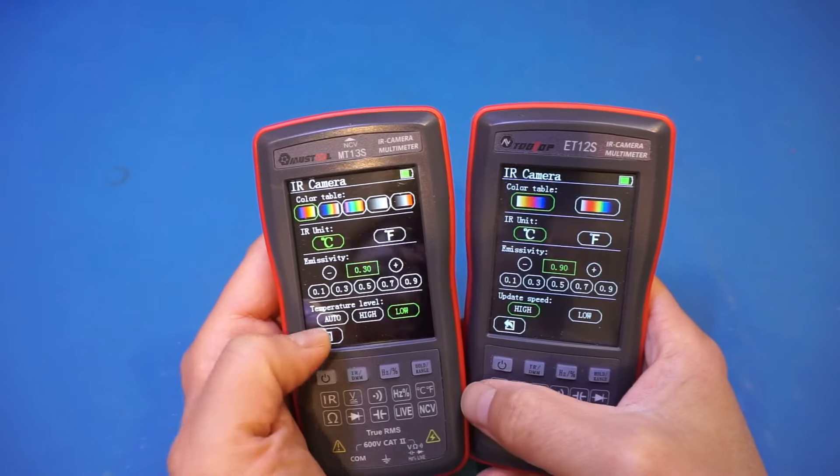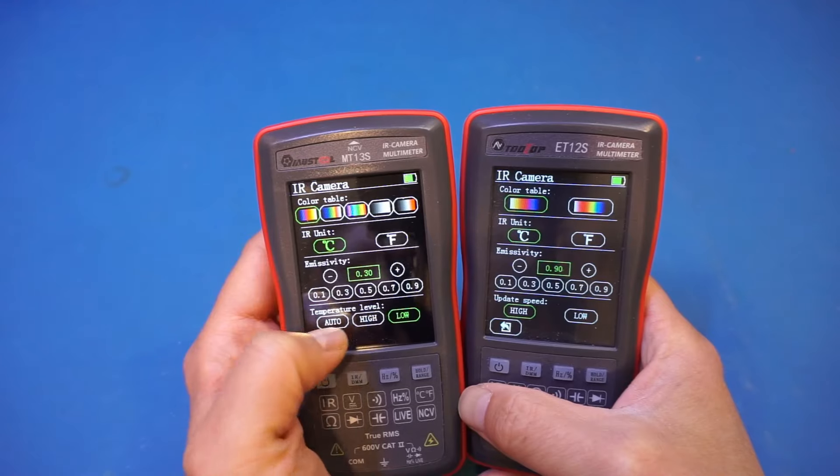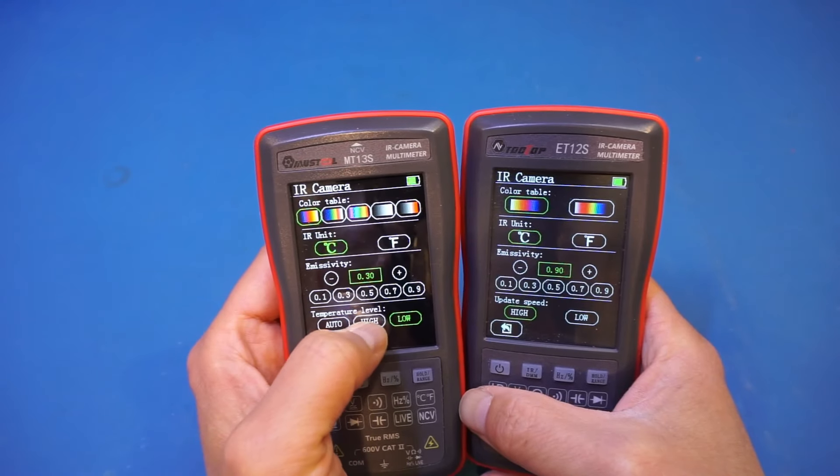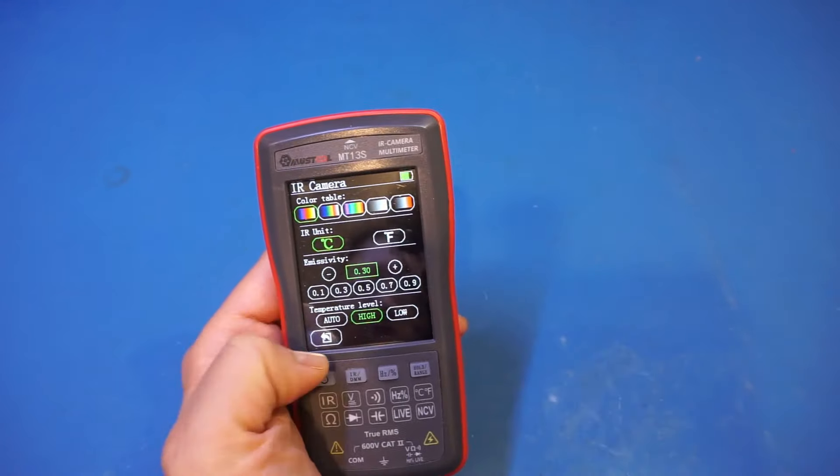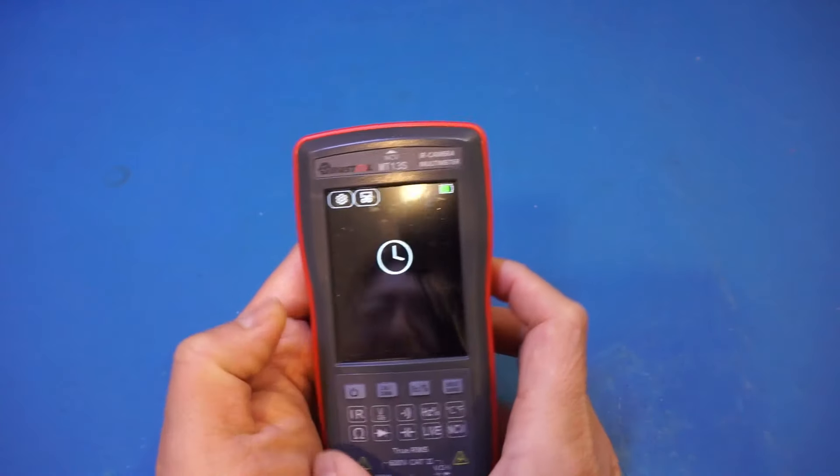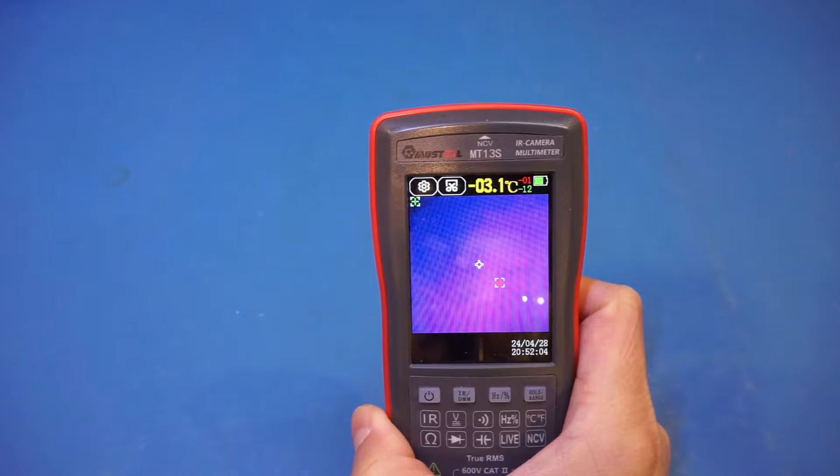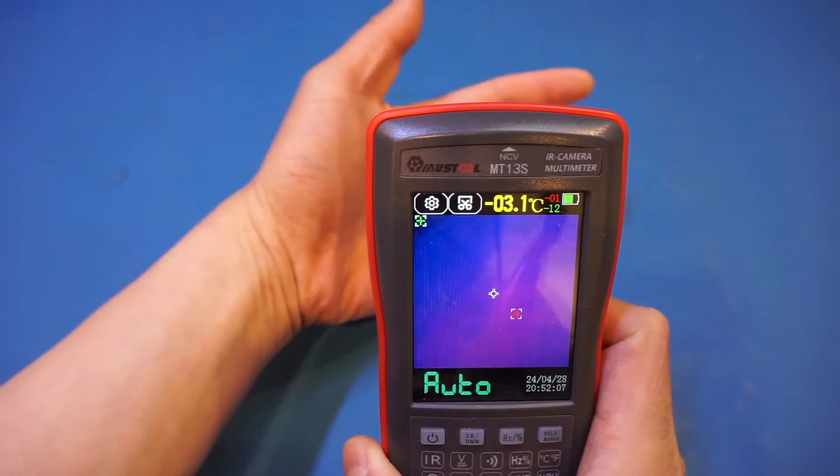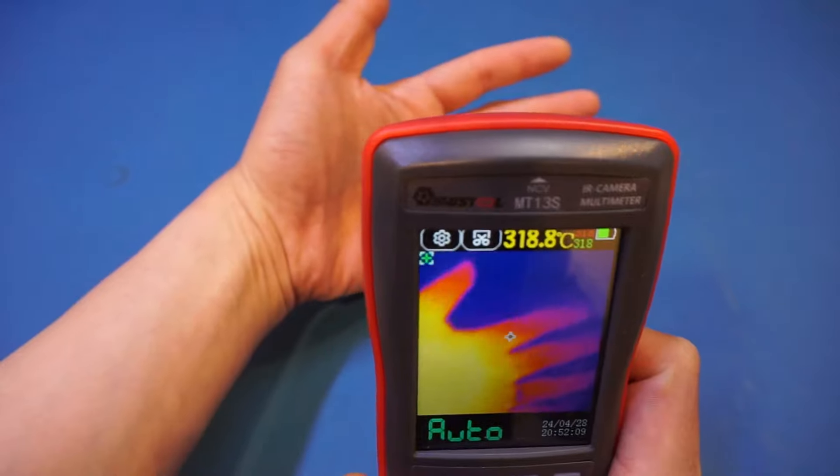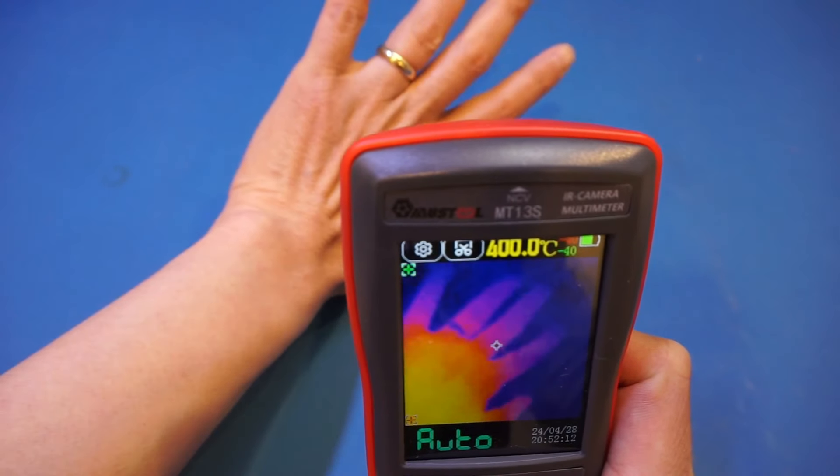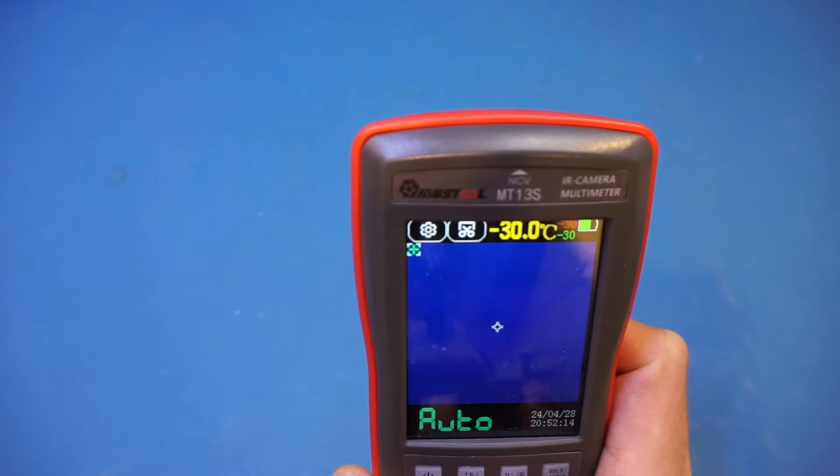Let's change it to high to see what we got here. So let's go back. And now we're supposedly measuring a higher temperature range. Now, if I put my hand over here, of course, it's calibrating. It looks like it's a little bit more green. And let's take a look at the background here.